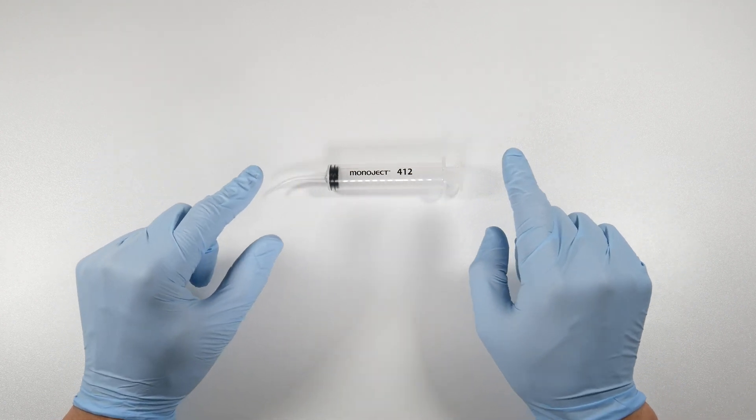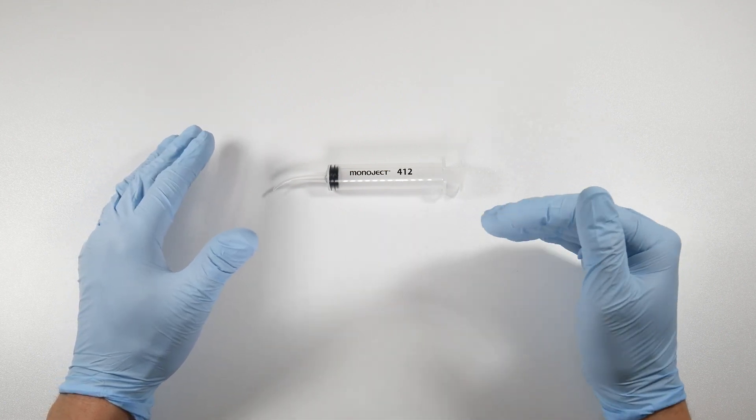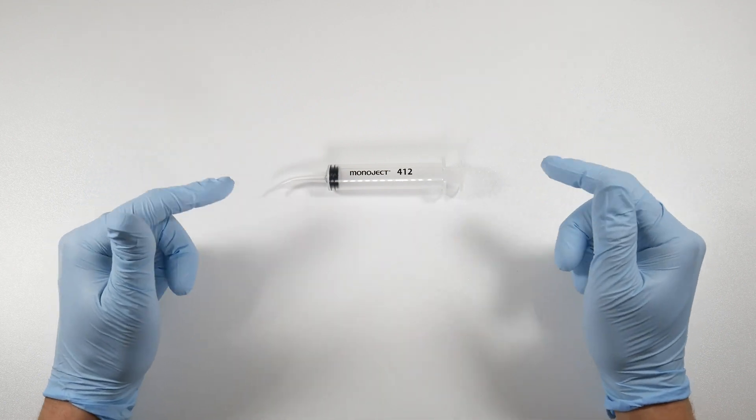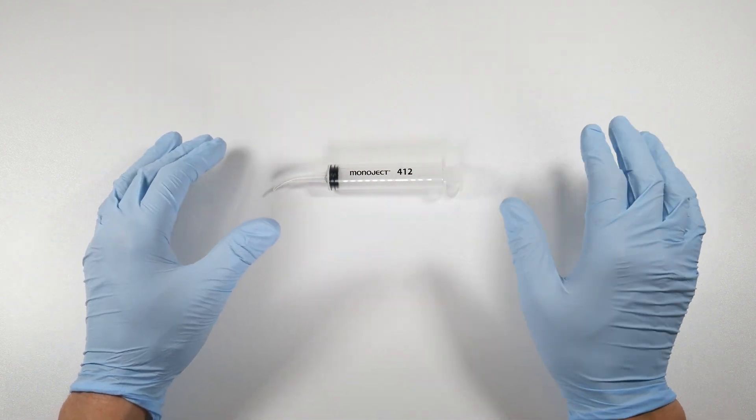When you get into the third molar region, say a lower impacted third molar, now you've got to kind of up your fluid a little bit because the debris that you've created and the flap that you've made is more extensive than other areas of the mouth.